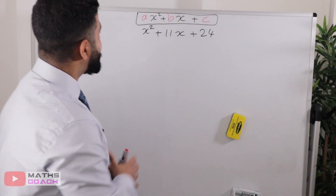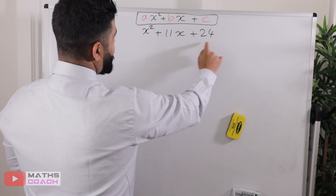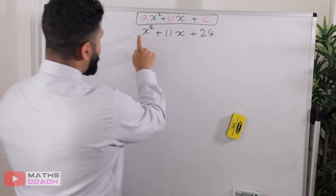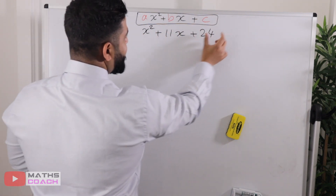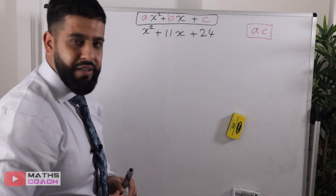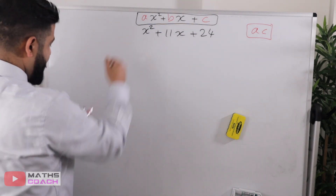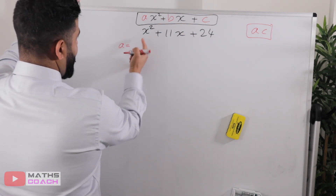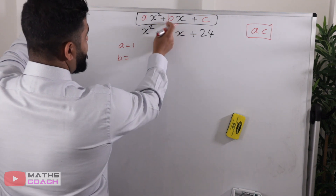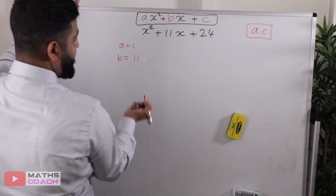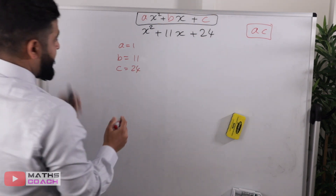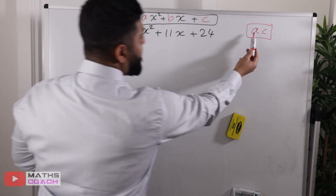The AC method is named because you look at the quadratic and identify the a, b, and c terms, then take the a and c terms and multiply them together — that's where the name comes from. So in our first example, what is our value for a? The value for a is 1, the value for b is positive 11, and the value for c is positive 24.